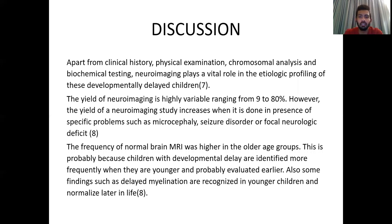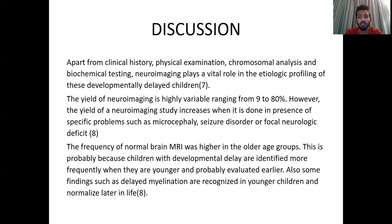Apart from clinical history, physical examination, chromosomal analysis, and biochemical testing, neuroimaging plays a vital role in the etiological profiling of these developmentally delayed children. The yield of neuroimaging is highly variable, ranging from 9 to 80 percent. However, the yield is increased when done in the presence of specific problems such as microcephaly, seizure disorders, or focal neurological deficits. The frequency of normal brain MRI was higher in the older age group, probably because children with developmental delay are identified more frequently when younger and evaluated earlier. Also, some findings such as delayed myelination are recognized in younger children and normalized later in life.